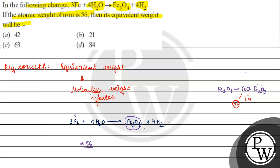And in the Fe₂O₃ case, oxygen is −2, so 2x = 6, which gives x = +3. So iron in Fe₂O₃ is +3.